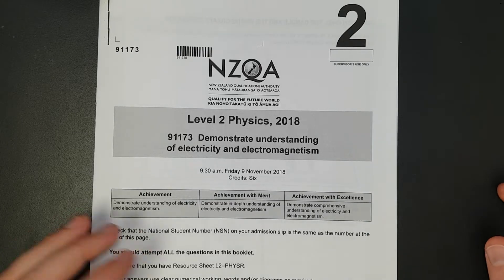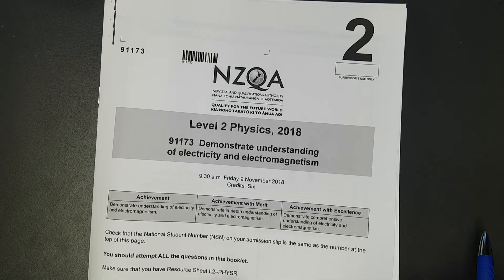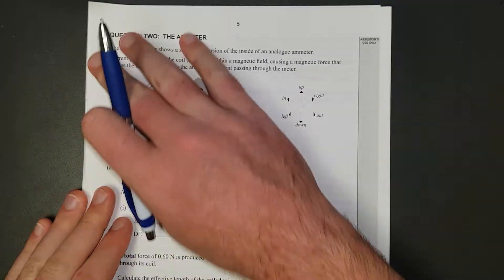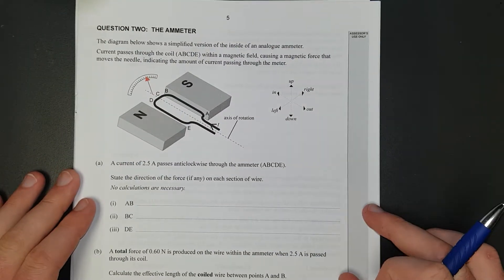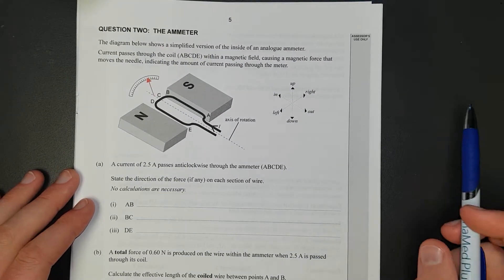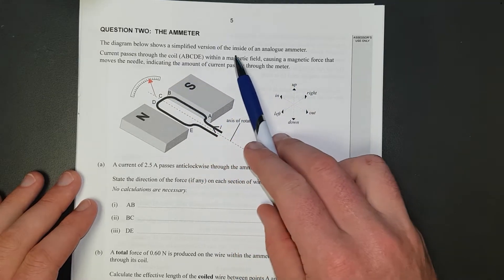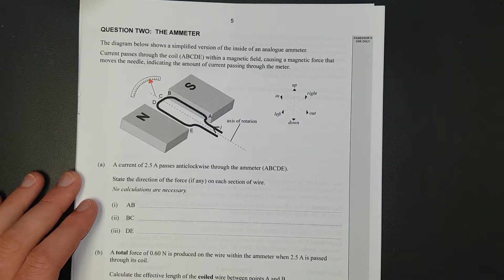In this video, I'll be working through question 2 of the 2018 electricity exam, level 2. Right, question 2. What do we got? We've got a DC motor. Oh wait, we've got a simplified version of an analog ammeter, that's interesting.